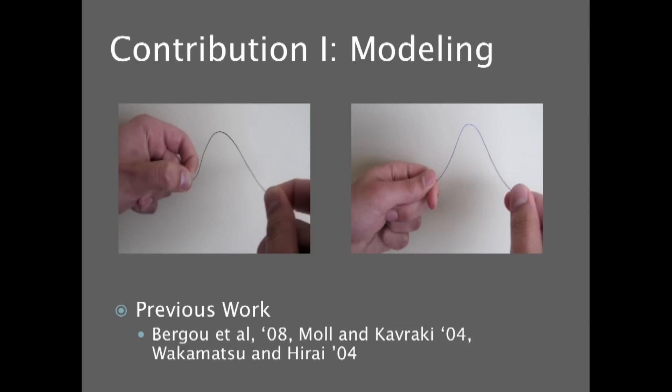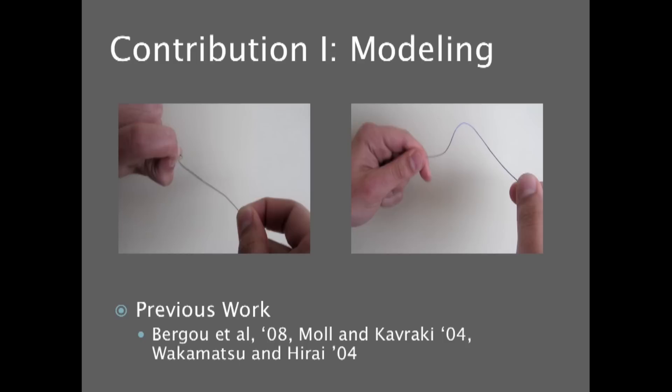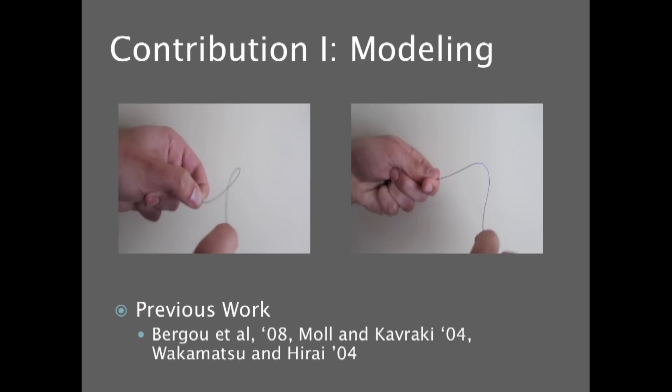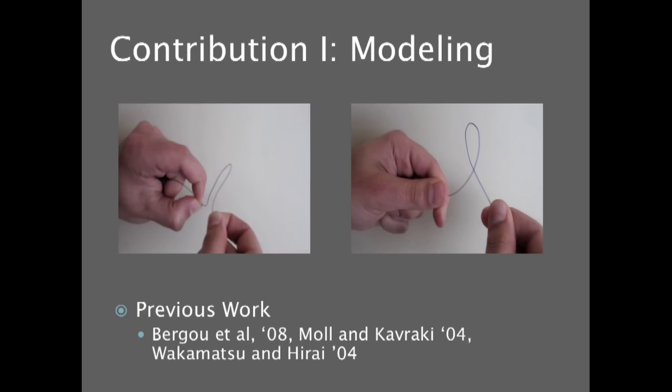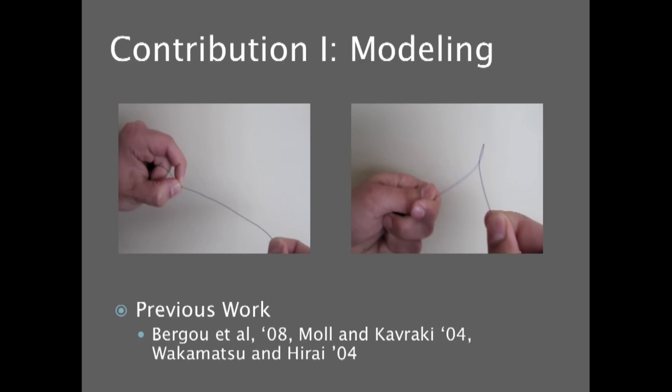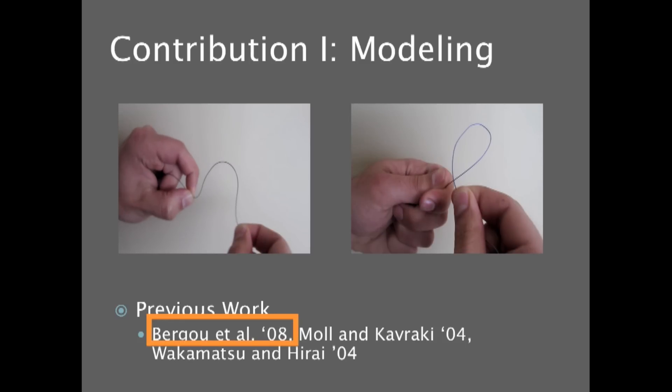These are the types of behaviors that we'd like to capture: bending, twisting, and the interaction between the two. And previously, people have actually built models and applied these to motion planning in basic forms. We're actually going to focus on the Bergeau et al. model and build our model on top of that.